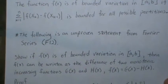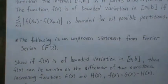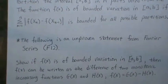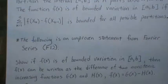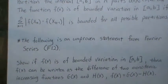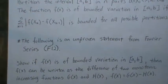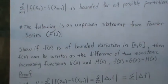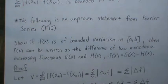If f is of bounded variation on [a, b], then f(x) can be written as the difference of two monotonic increasing functions g(x) and h(x), such that f(x) equals g(x) minus h(x). We're going to prove that here.